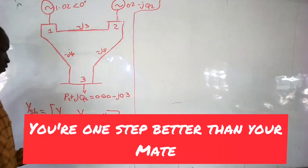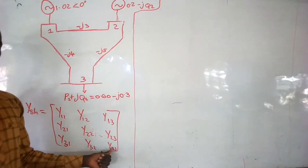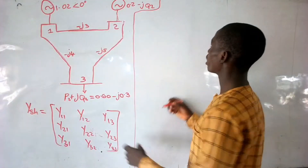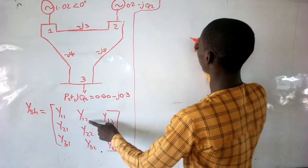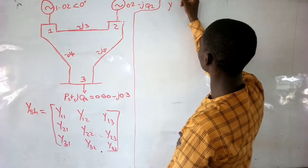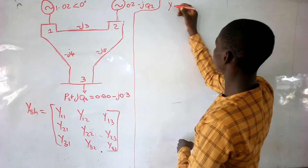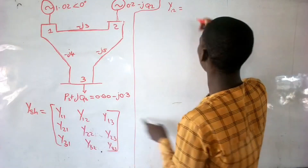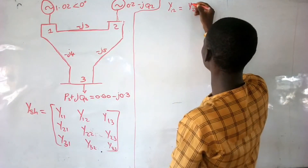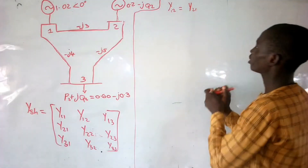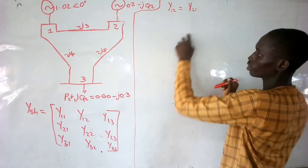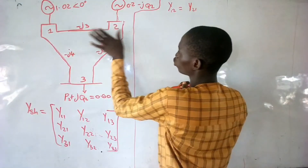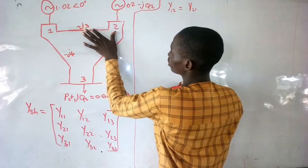If you observe something here, here is Y11, Y12, and Y32. I want you to note that Y12 here is the same as Y21 — that is, the admittance of 1,2 is the same as the admittance of 2,1. This is 1 to 2, and this is 2 to 1; that T means minus J3.